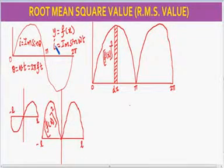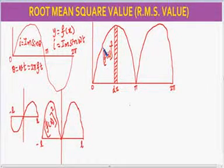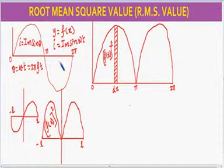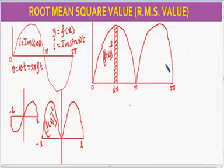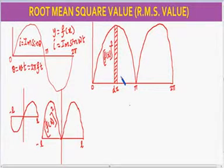Let us square each and every coordinate. The positive coordinates, that is [f(x)]², are represented from 0 to π, and the negative coordinates, when squared, also become positive from π to 2π. The root mean square value is the area under the squared curve divided by the base.